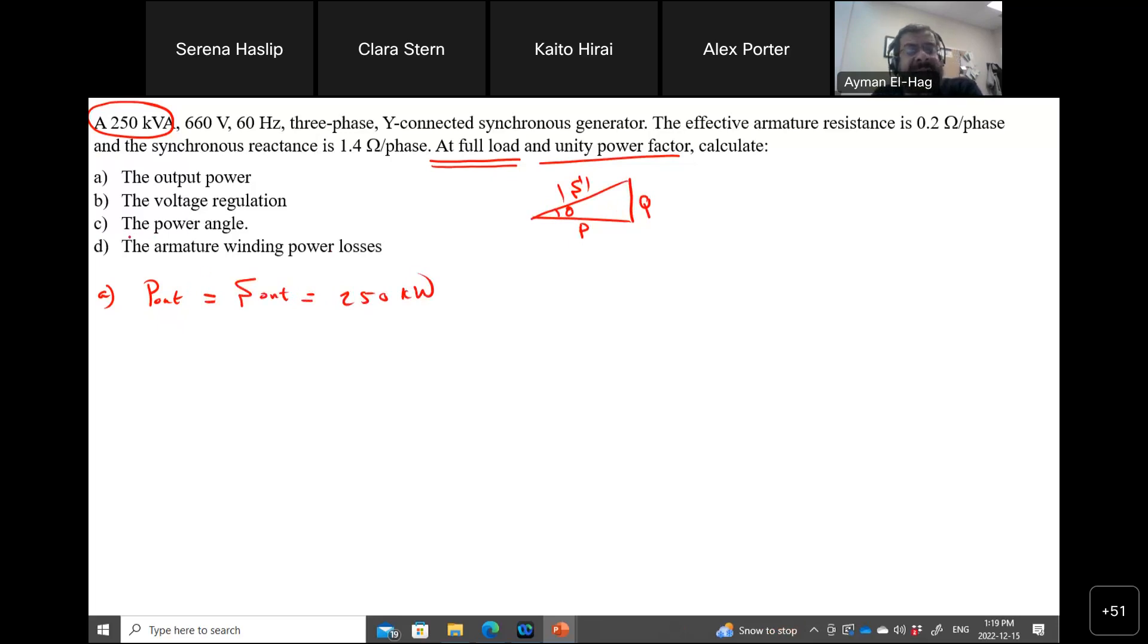Second, find the voltage regulation. Now for the voltage regulation, you need to draw the equivalent circuit. So this is the single phase of your synchronous generator. So this is your E_A. You will have your R_A. You will have jX_S. And this is your V terminal.